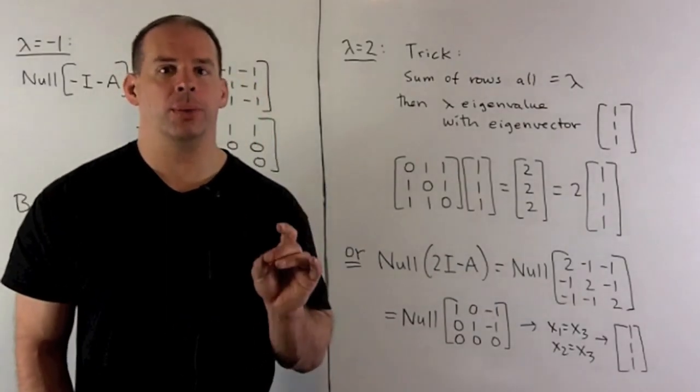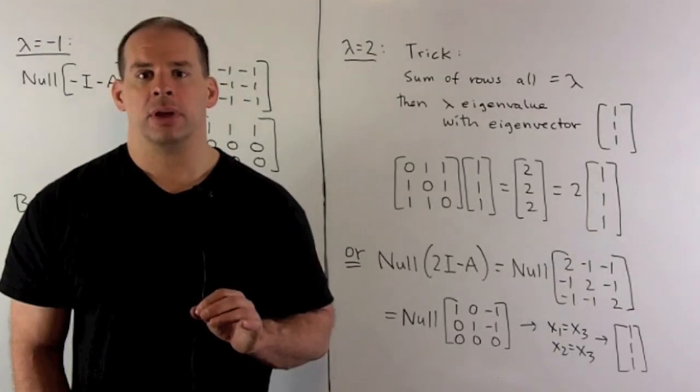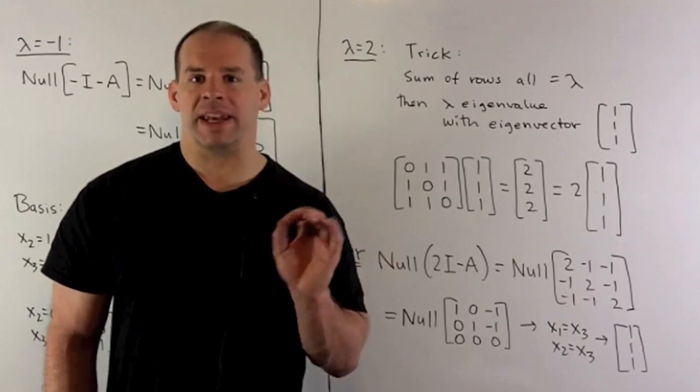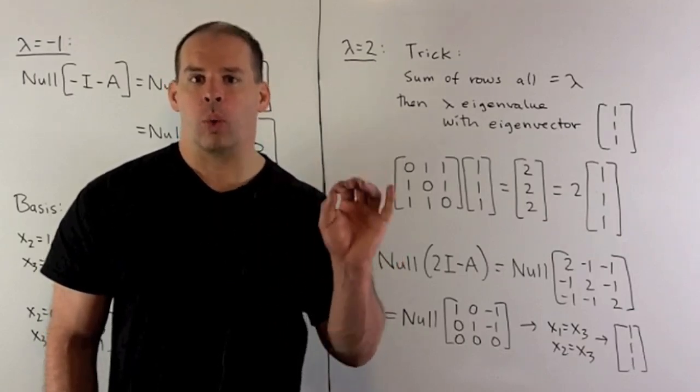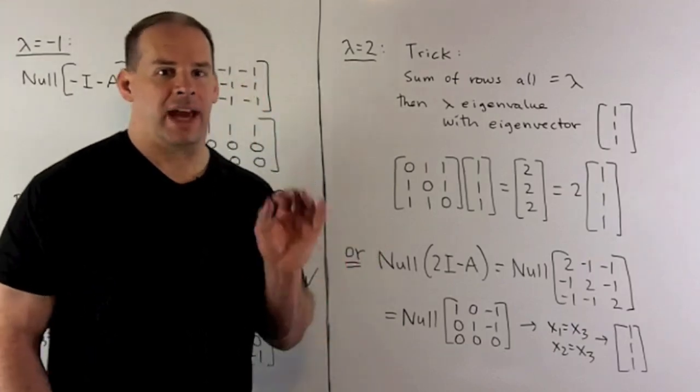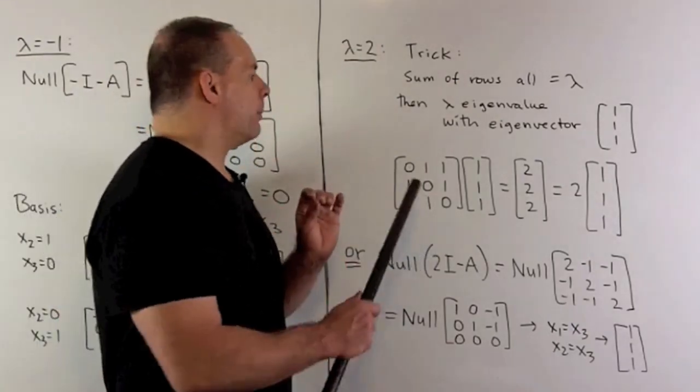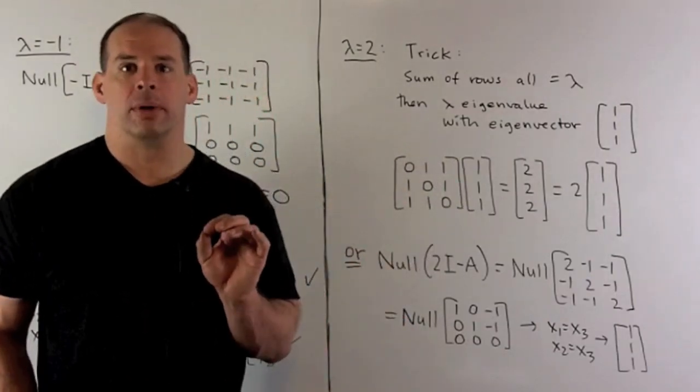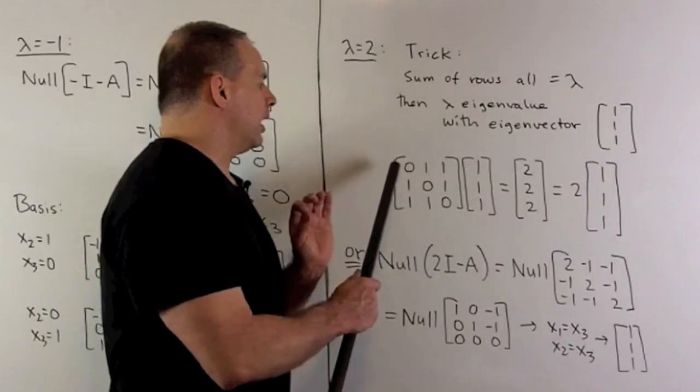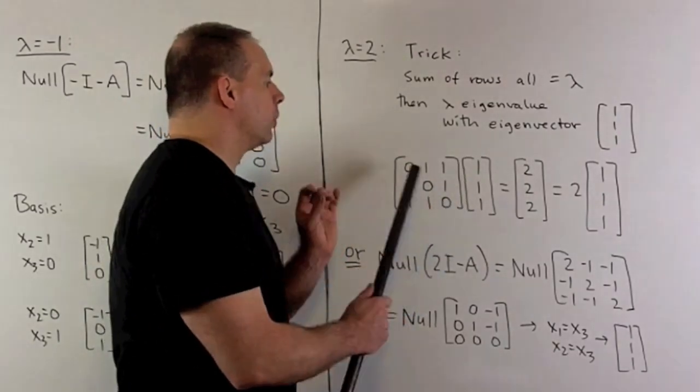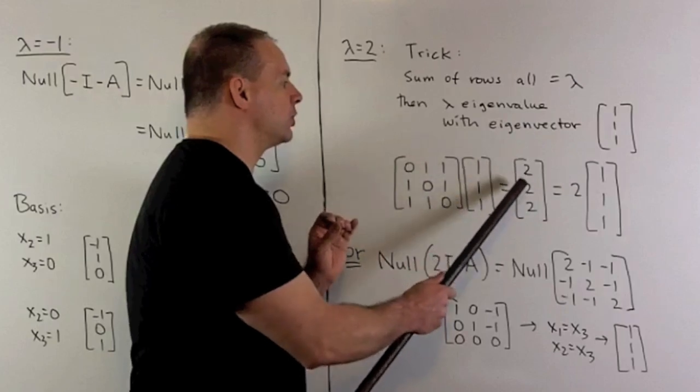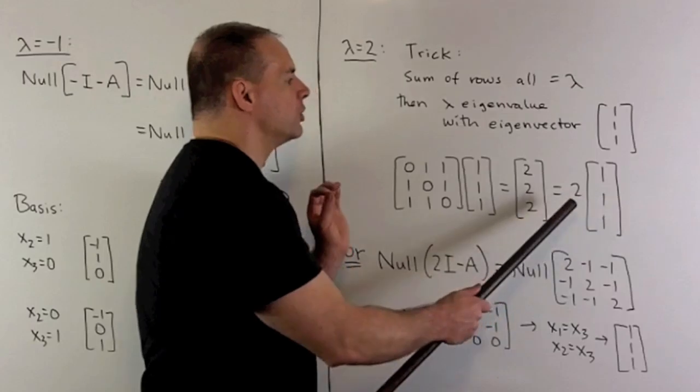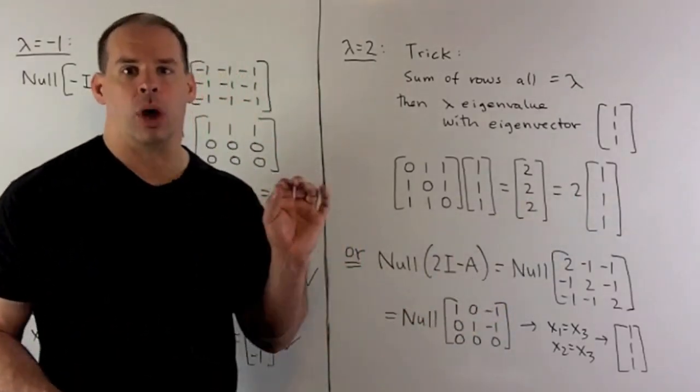For the eigenvalue, lambda equals two, we have a trick that's worth pointing out. So if in our matrix, the sum of each row is always the same, that sum is going to be an eigenvalue with eigenvector 1 1 1. Now, the idea here, if I multiply a row of our matrix times 1 1 1, all we're doing is taking the sum. So in our case here, you'll note, if I multiply A by 1 1 1, what comes out is going to be the sum of each row. So I'll have 2, 2, 2. And then that's just saying we have twice our original vector. So 2 is going to be an eigenvalue with eigenvector 1 1 1.